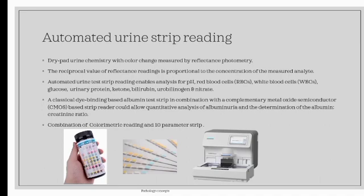Automated urine strip reading is based on the dry pad urine chemistry with the color change measured by reflectance photometry. The reciprocal value of reflectance reading is proportional to the concentration of measured analyte.